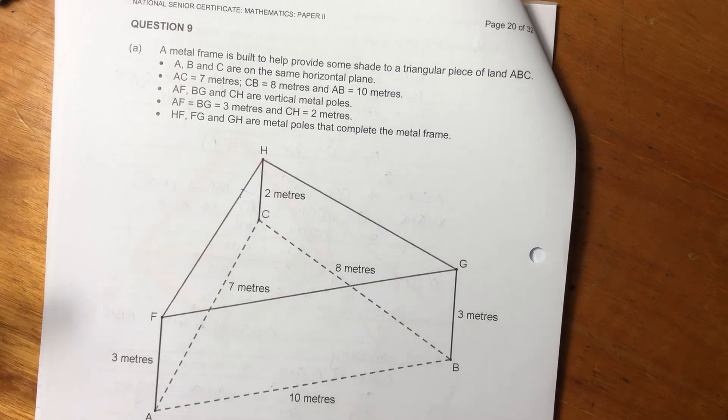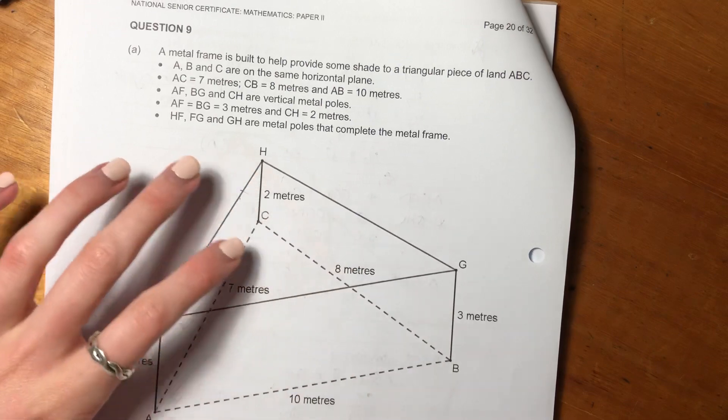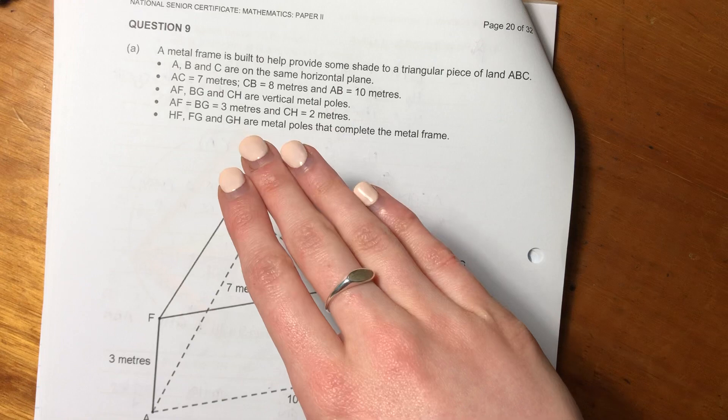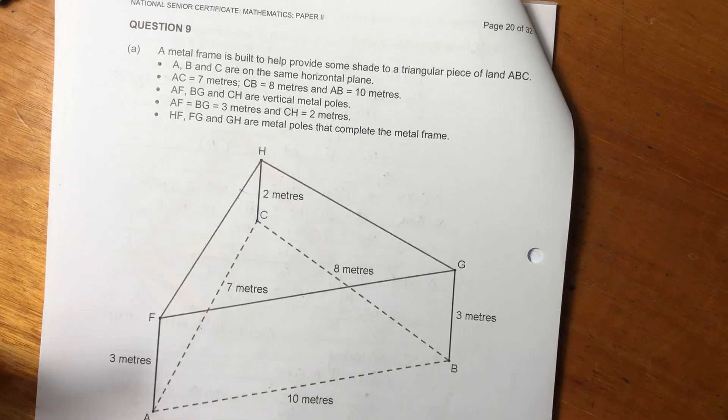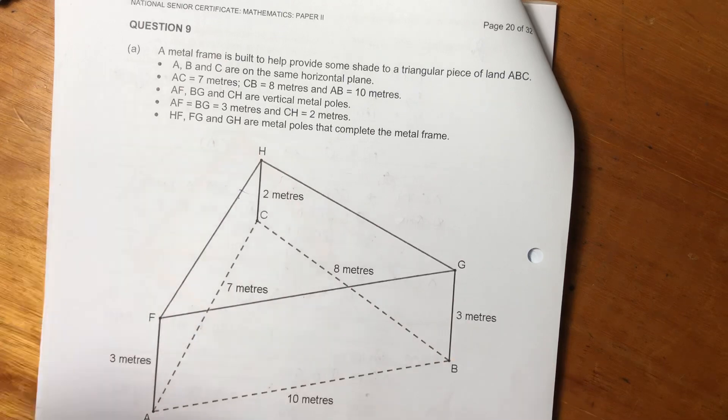They said that AF, BG, and CH are vertical poles. We see that AF and BG are both three, but HC is two. So this is a bit of a slant downwards, which is going to be a little bit tricky when we come to doing our working out. So it's important to try to conceptualize the shape that you're seeing in 3D.